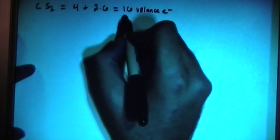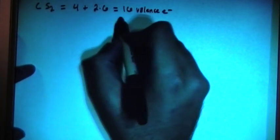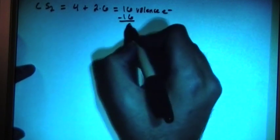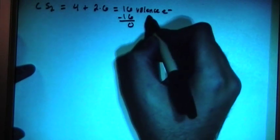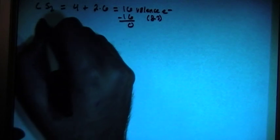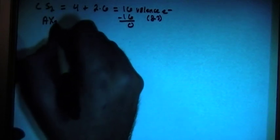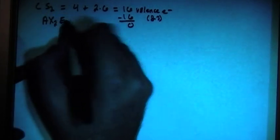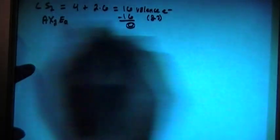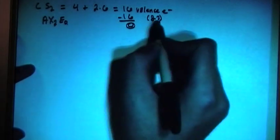So what we do, since it's a central atom, we subtract out the largest multiple of 8 out of this total, which is going to be 16, gives us 0, and that is 8 times 2. So that means that this compound is an AX2E0, where this 0 comes from this, and the 2 comes from the 2 here.